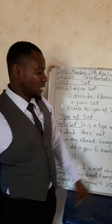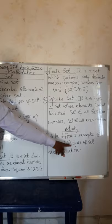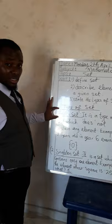Activity: Write different examples of the 4 types of sets discussed above. You should give an example of an empty set, an example of a singleton set, an example of a finite set, and an example of an infinite set.